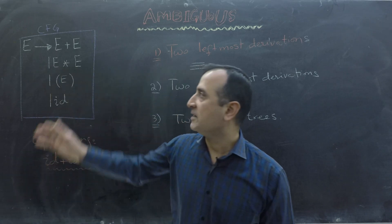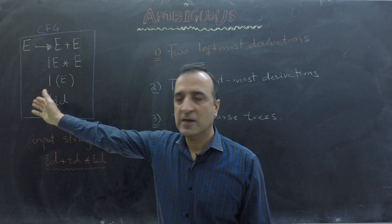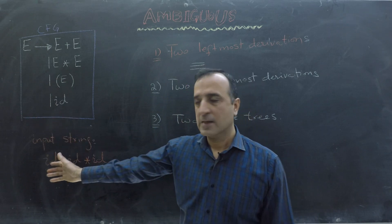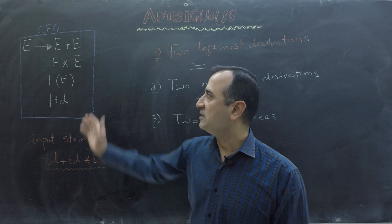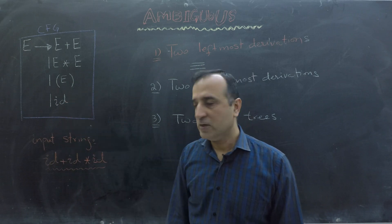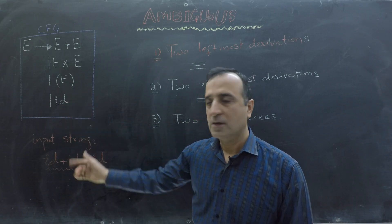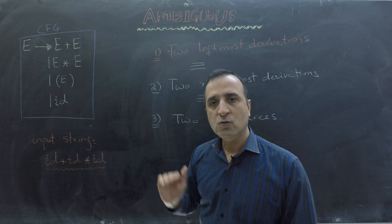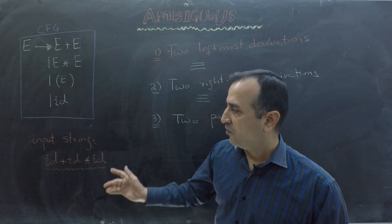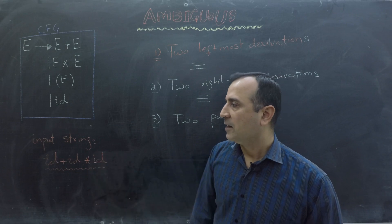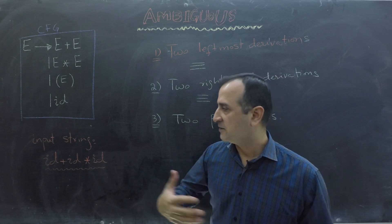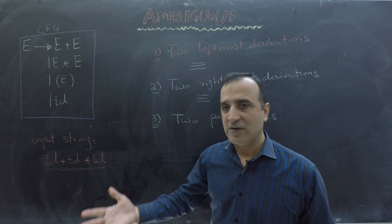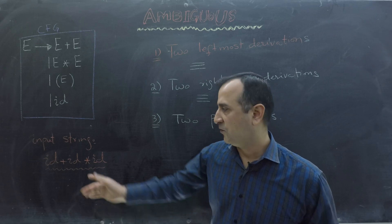Here we have a context-free grammar which is ambiguous, and an input string. We have to show that this context-free grammar is ambiguous for this input string. To do that, I will create two leftmost derivations of that input string and also two different parse trees. You can also create two rightmost derivations for this input string.